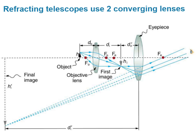By placing an object within the focal length of a converging lens, we can use that converging lens as a magnifier and see a very magnified image.